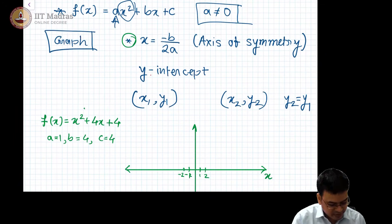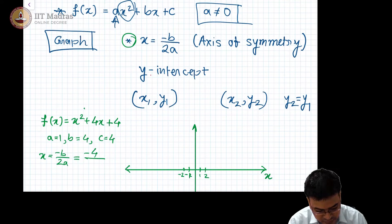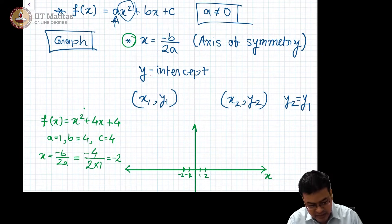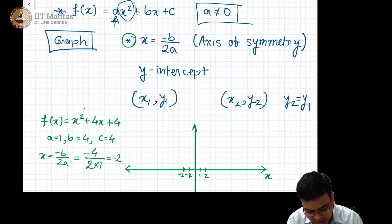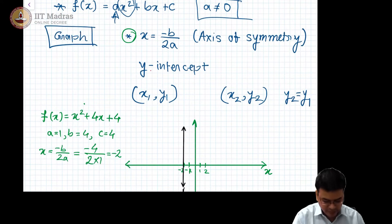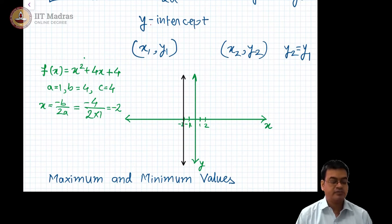What is −b/2a? x = −b/2a = −4 divided by 2 times 1, which gives me x = −2. So x = −2 is the axis of symmetry, and I should draw a vertical line along this point. Let me draw the vertical line at x = −2. Remember, this is the axis of symmetry.